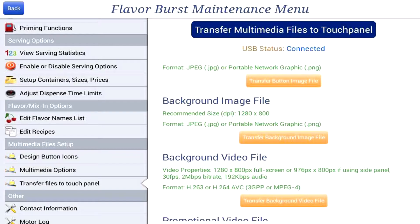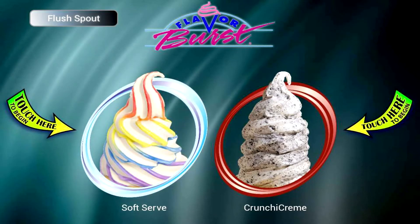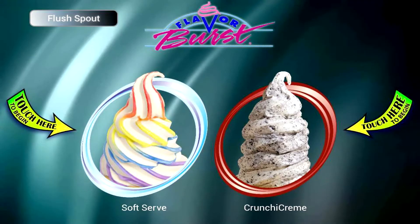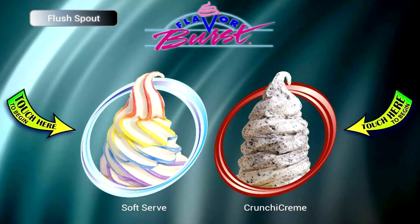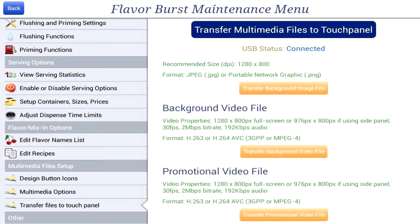You can choose either an image or video to display as the background of the touch panel. Currently a video is set to display, as you can see by this video of light rays against a blue and black background. Lastly, we have promotional videos. During a certain amount of inactivity, a promotional video will play on the color touch panel. This is the current preset promotional video set to display.